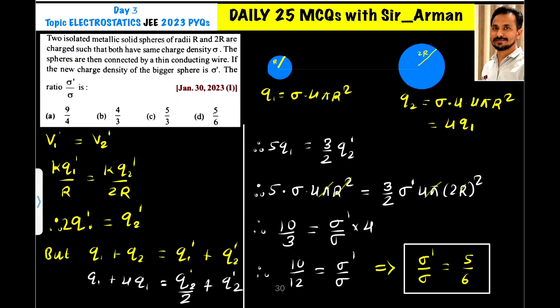Two isolated solid spheres of radius r and 2r are charged such that both have same charge density sigma. The spheres are then connected by a thin conducting wire. If the new charge density of the bigger sphere is sigma dash, the ratio sigma dash by sigma is to be found.